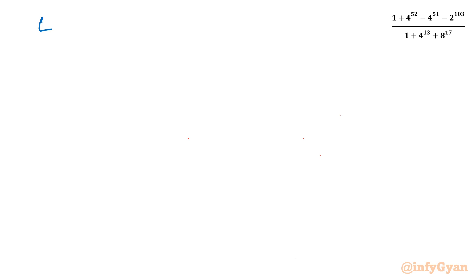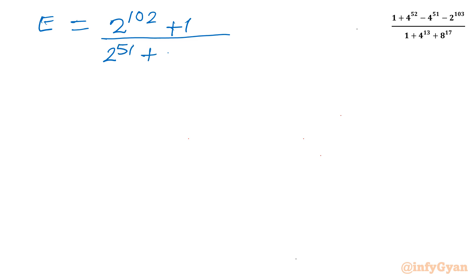So I can write expression E equal to 2 raised to the power 102 plus 1, in the numerator, and the denominator was 2 raised to the power 51 plus 2 raised to the power 26 plus 1. Now we will use a substitution: let 2 raised to the power 26 equal to t.